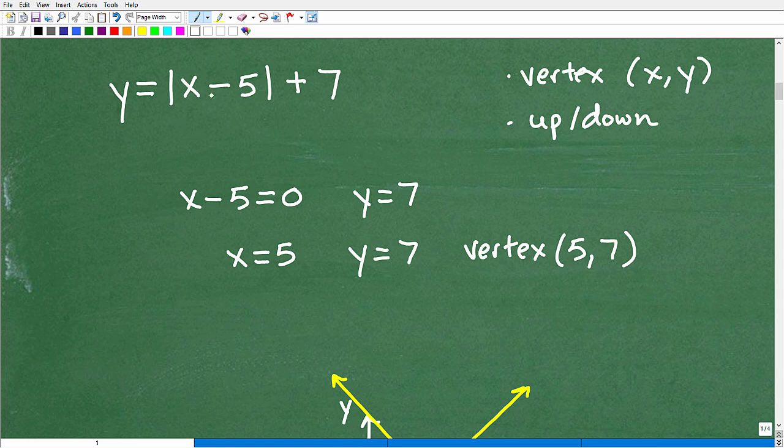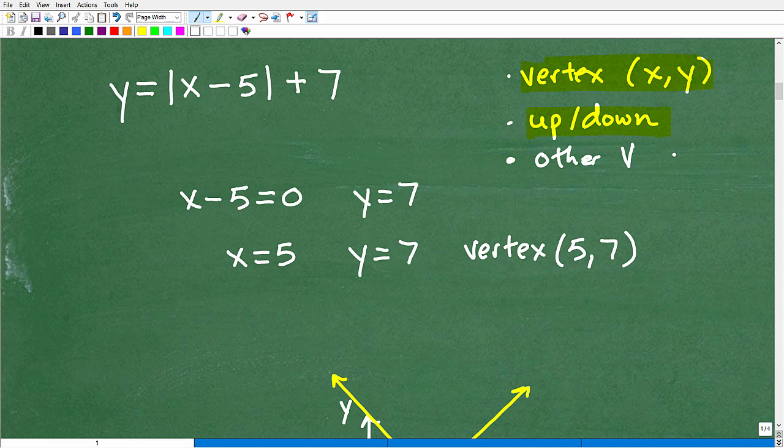You could have a skinny V like this, a narrow V, or you could have a wide V. And I'll talk very briefly what impacts these things here. But let's get right to this problem and get right to it. Okay, so here's our problem: Y equals absolute value of X minus 5 plus 7. So what do we want to do? Well, again, I want to find the vertex, and I want to just know whether this is an up or down V. And then I'll tell you briefly, let's actually just put something up here. Let's talk about other characteristics. In other words, is it going to be narrow? Is it going to be wide?